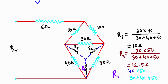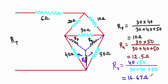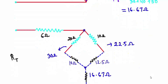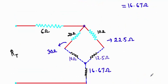For the third resistance RR, I will multiply the two adjacent resistors 40 and 50, then divide by the sum 30 plus 40 plus 50. So RR = (40 × 50) / (30 + 40 + 50) = 16.67 ohm. Converting this Delta into Y gives us: RP = 10 ohm, RQ = 12.5 ohm, and RR = 16.67 ohm.